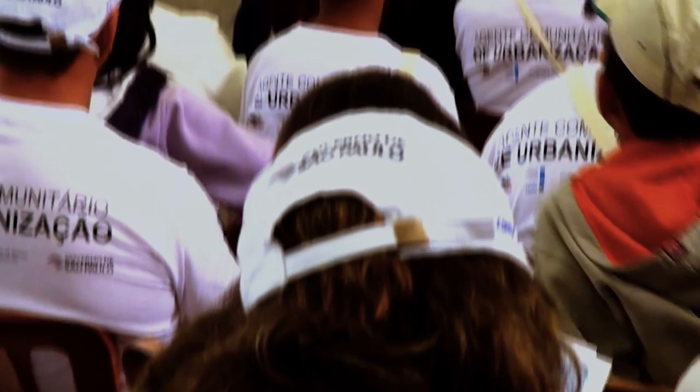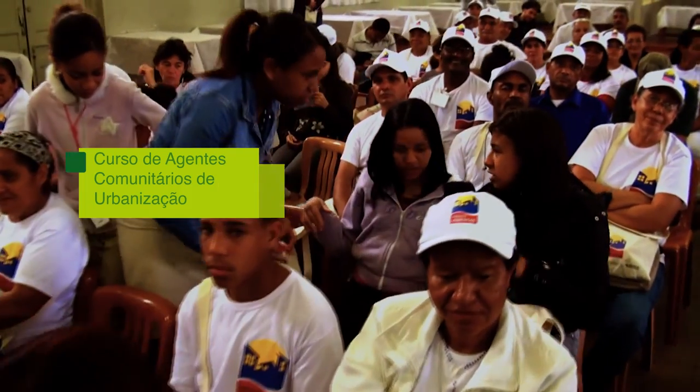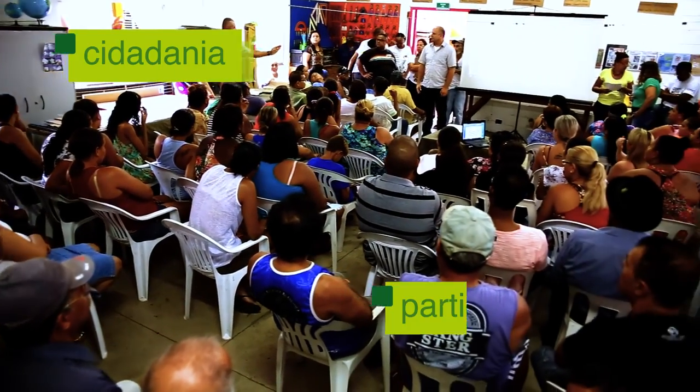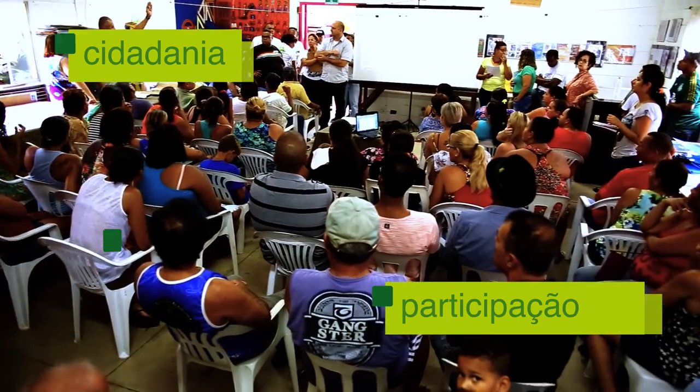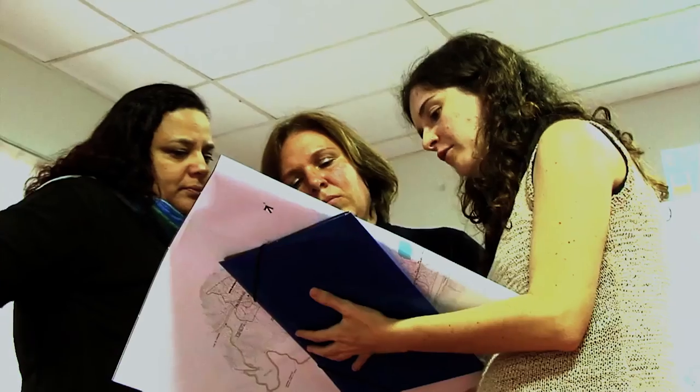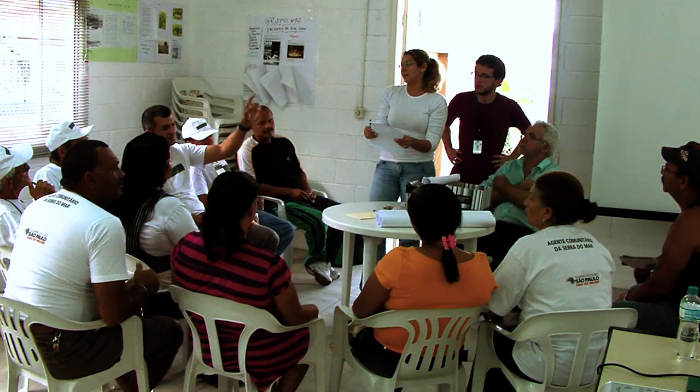Tudo começa assim: moradores eleitos que representam toda a comunidade participam do curso de Agentes Comunitários de Urbanização, que aborda cidadania, participação, projeto de urbanização, vários temas. Durante o curso, moradores e técnicos sociais discutem e propõem alternativas de projetos de desenvolvimento local, envolvendo cinco dimensões.